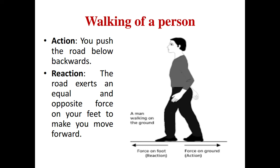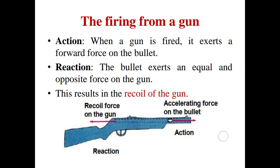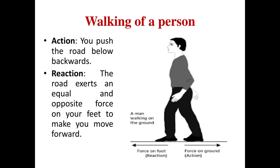Let us discuss some examples based on Newton's third law of motion. First, as we discussed in the starting — walking of a person. We are applying force on the floor in backward direction; that is the action force. But according to Newton's third law of motion, a reaction force is generated on our body, on our feet, in forward direction. Due to this reaction force, we move in forward direction.